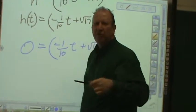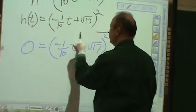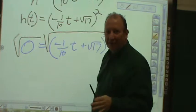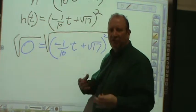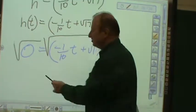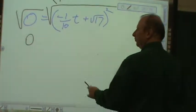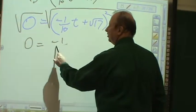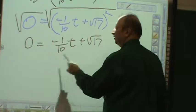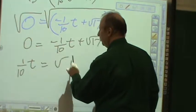0 is equal to (negative 1/10 t plus √17)². Of course, whatever you do to one side of the equation, you do to the other. So, I will take the square root of both sides. I know I don't have to do it at a calculus level, but I do show every single piece that's out there. Square root of 0 is still 0. Square root of 0 is equal to negative 1/10 t plus √17. 1/10 t is equal to √17.